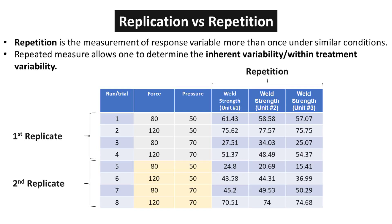Repetition, in the context of scientific research, refers to the practice of measuring a response variable multiple times under similar conditions. By conducting repeated measures, researchers are able to gain a better understanding of the inherent variability within a treatment, allowing for more accurate and reliable results.